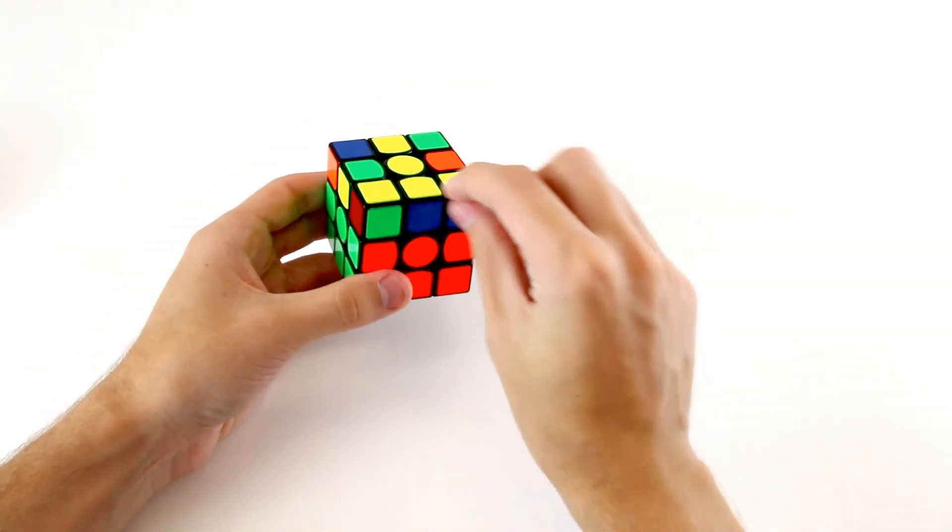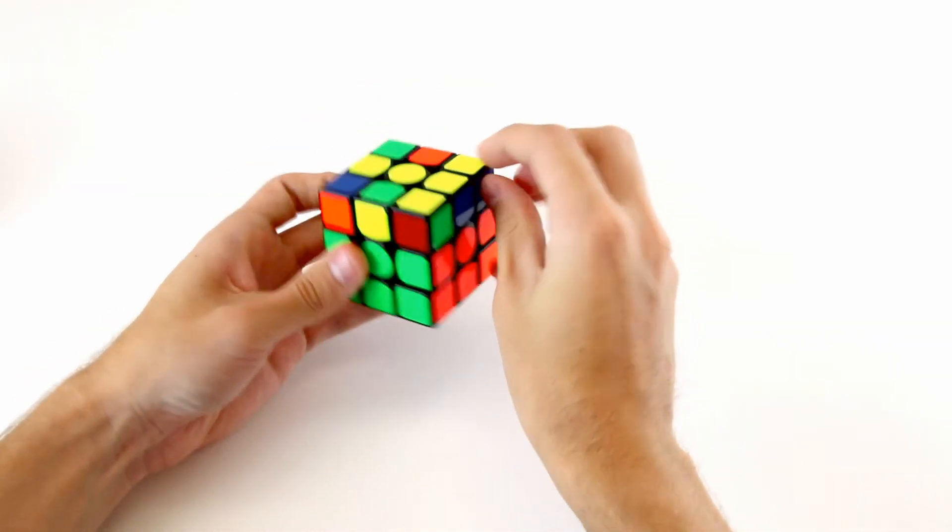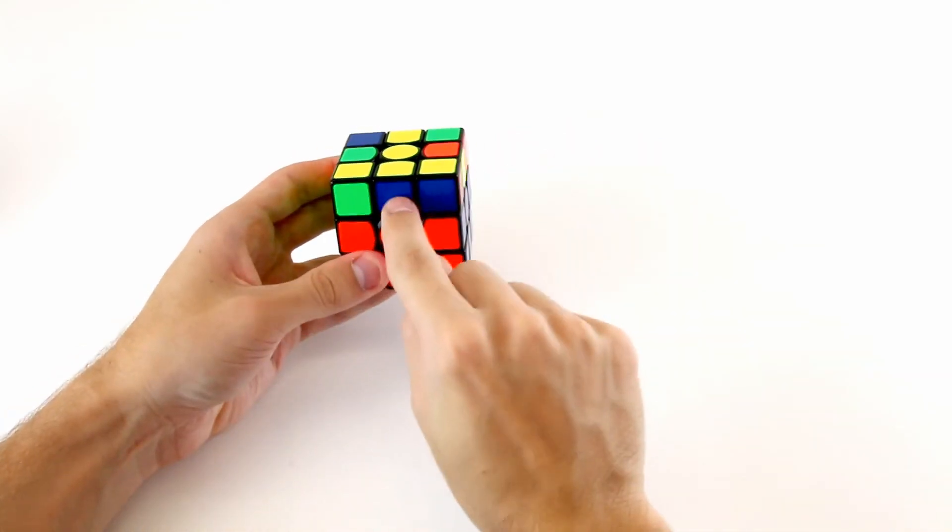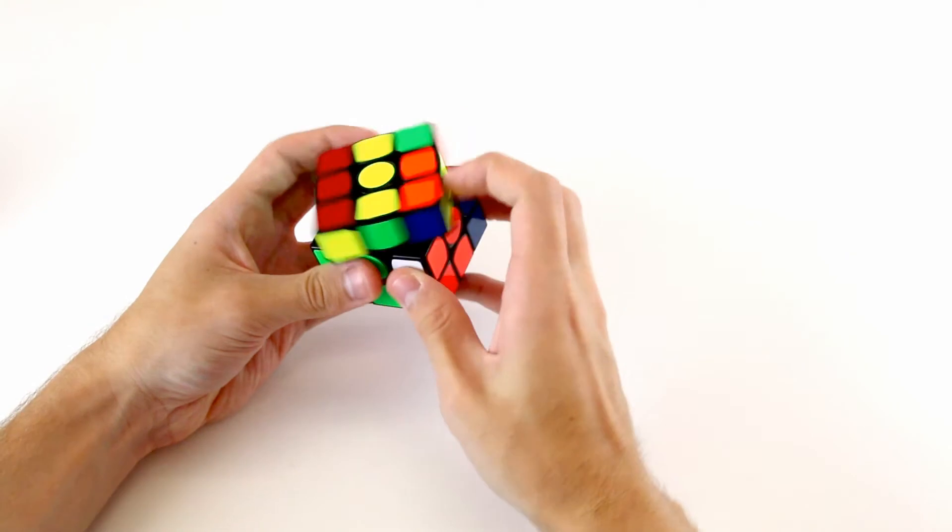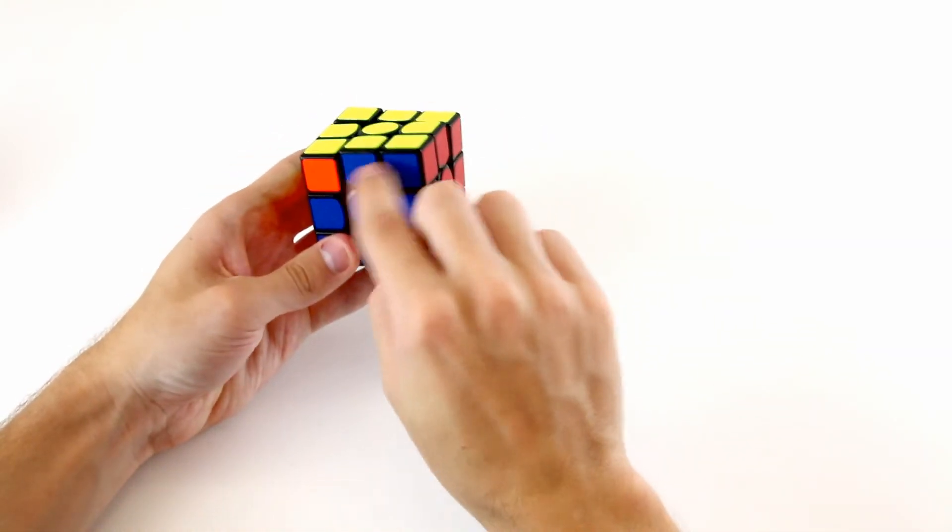The other T case is pretty easy. It only preserves this block in the back right here, so for example, if we have these two blue stickers matching, then doing an F R U R' U' F' will actually preserve these two.